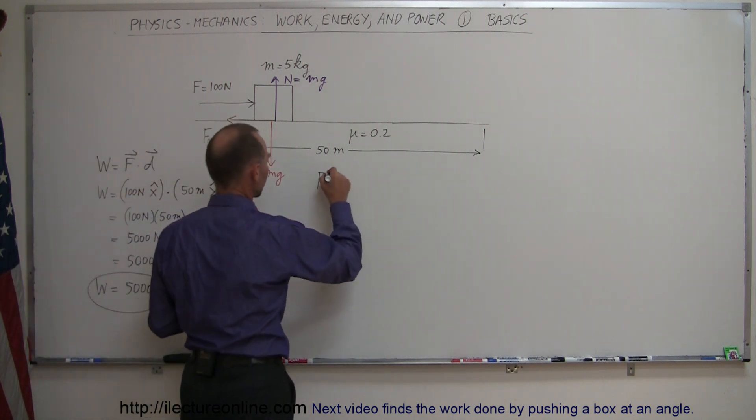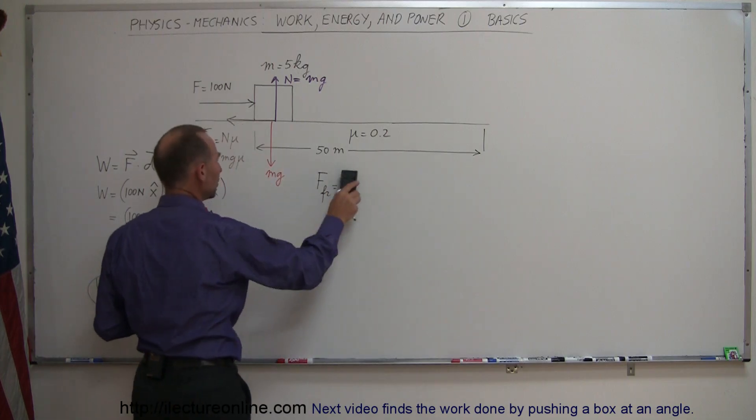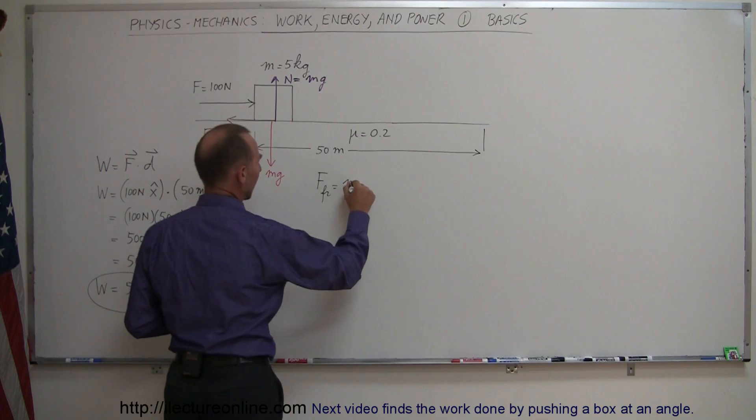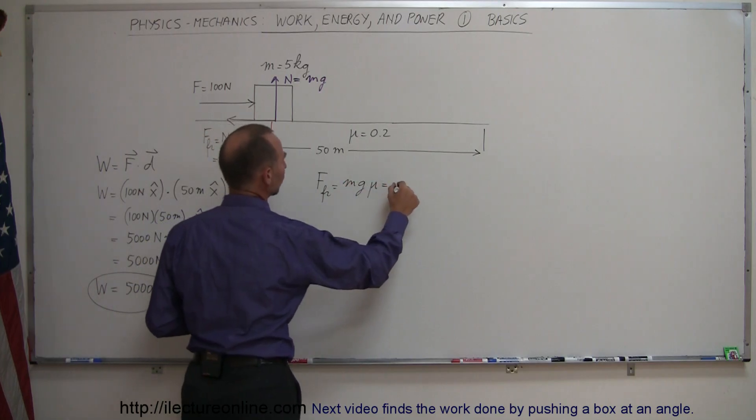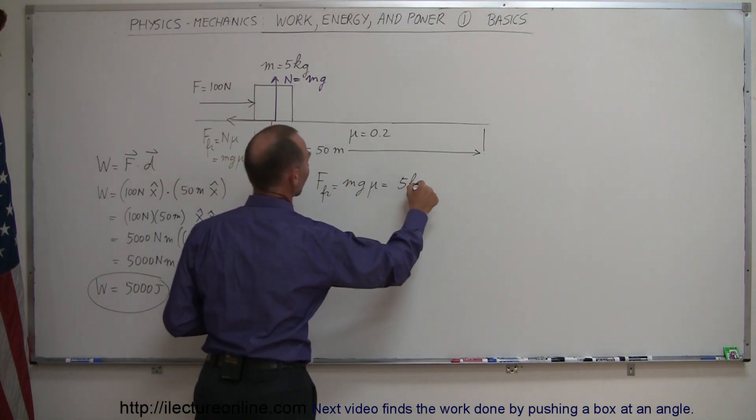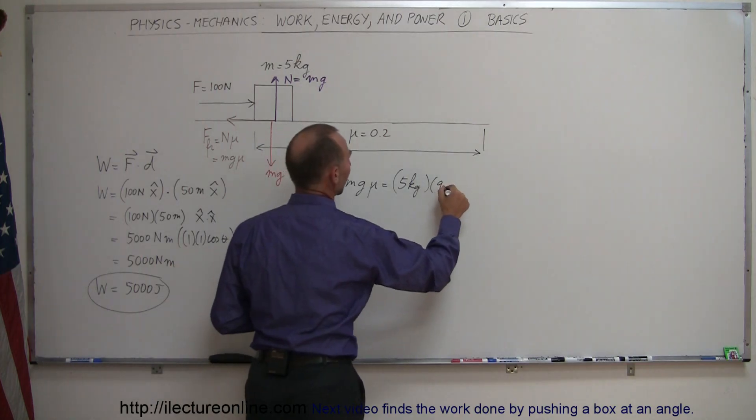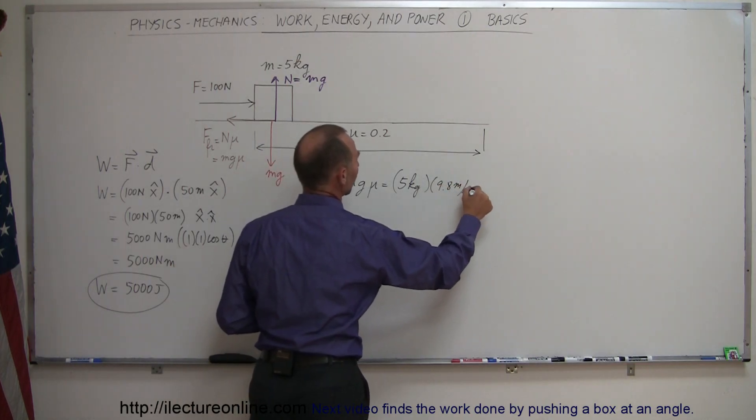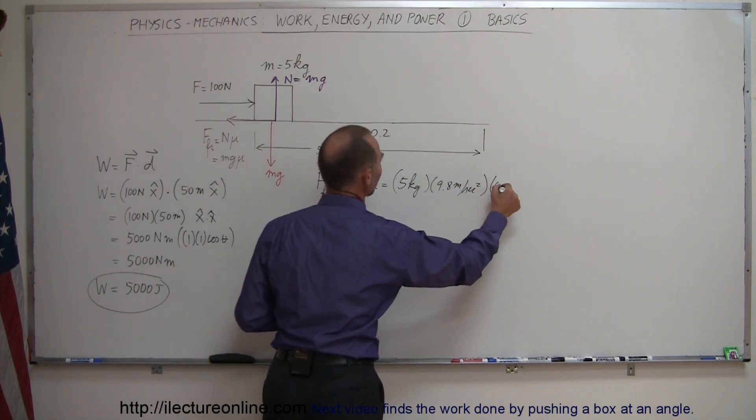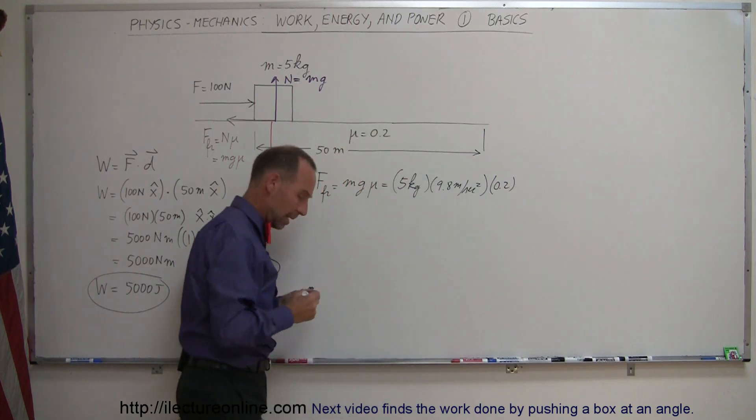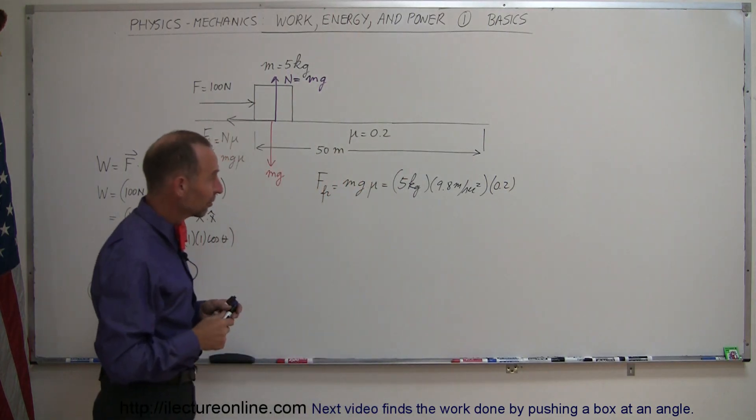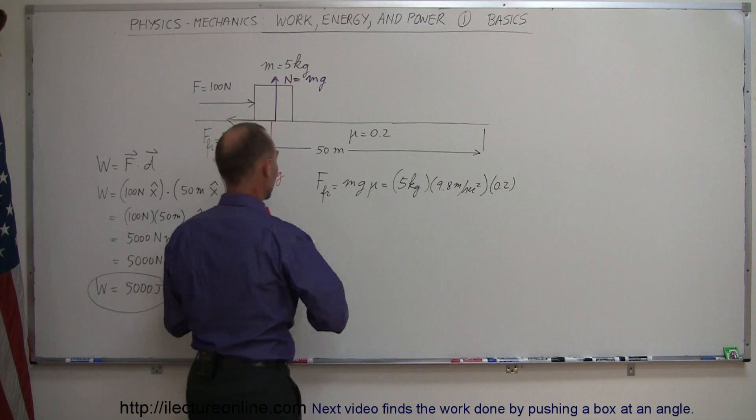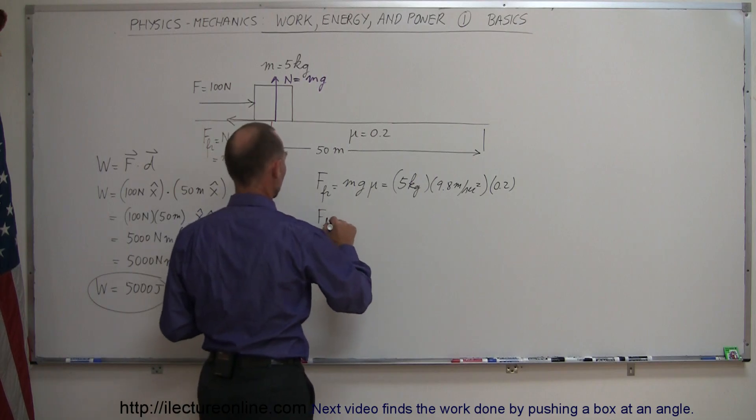So force friction is equal to normal force, or I just write mg mu, which is equal to the mass of 5 kilograms times 9.8 meters per second squared times mu of 0.2. And 0.2 times 5 is exactly 1, so that means that the force friction is equal to 9.8 newtons.